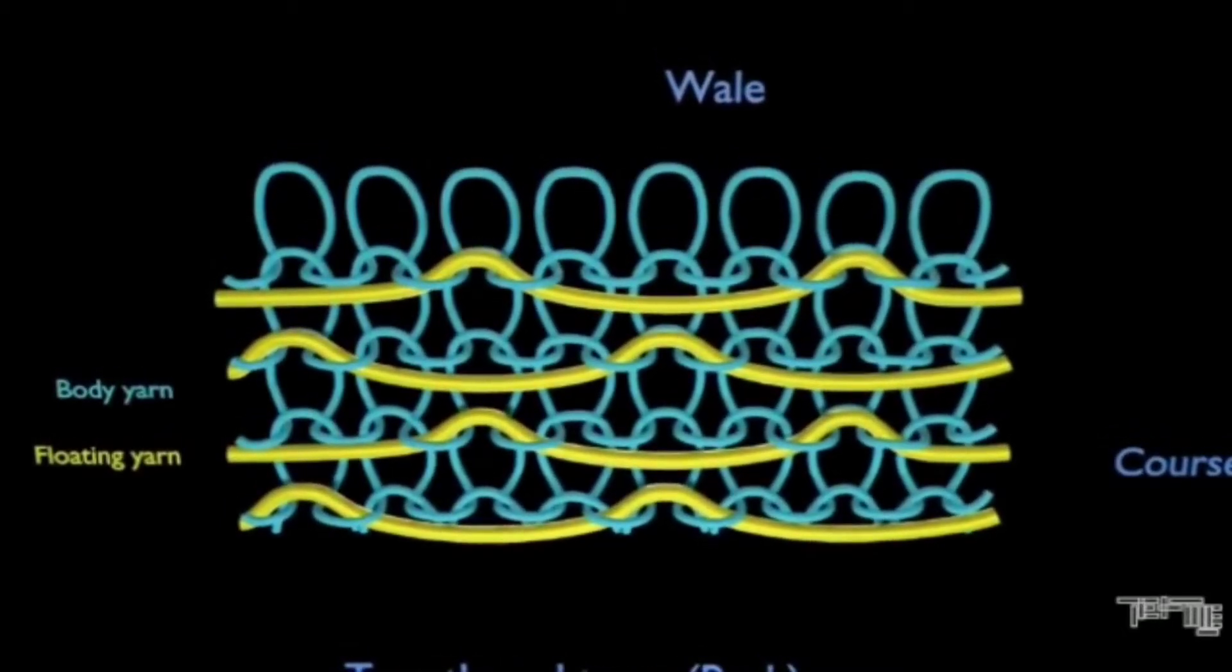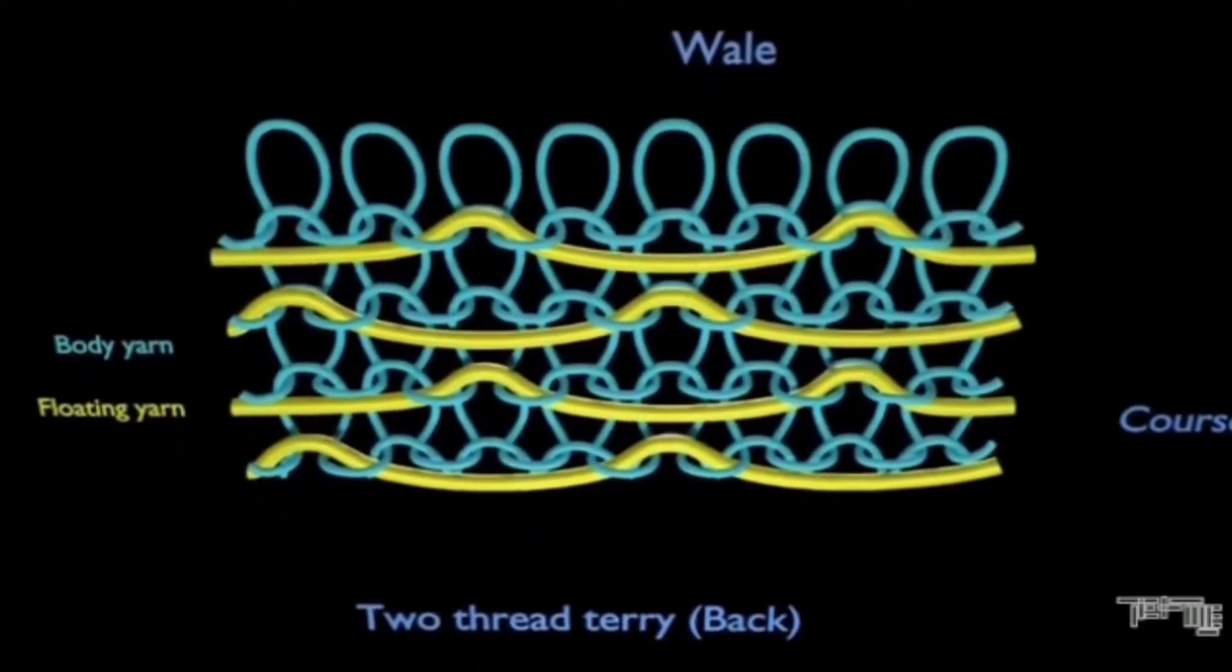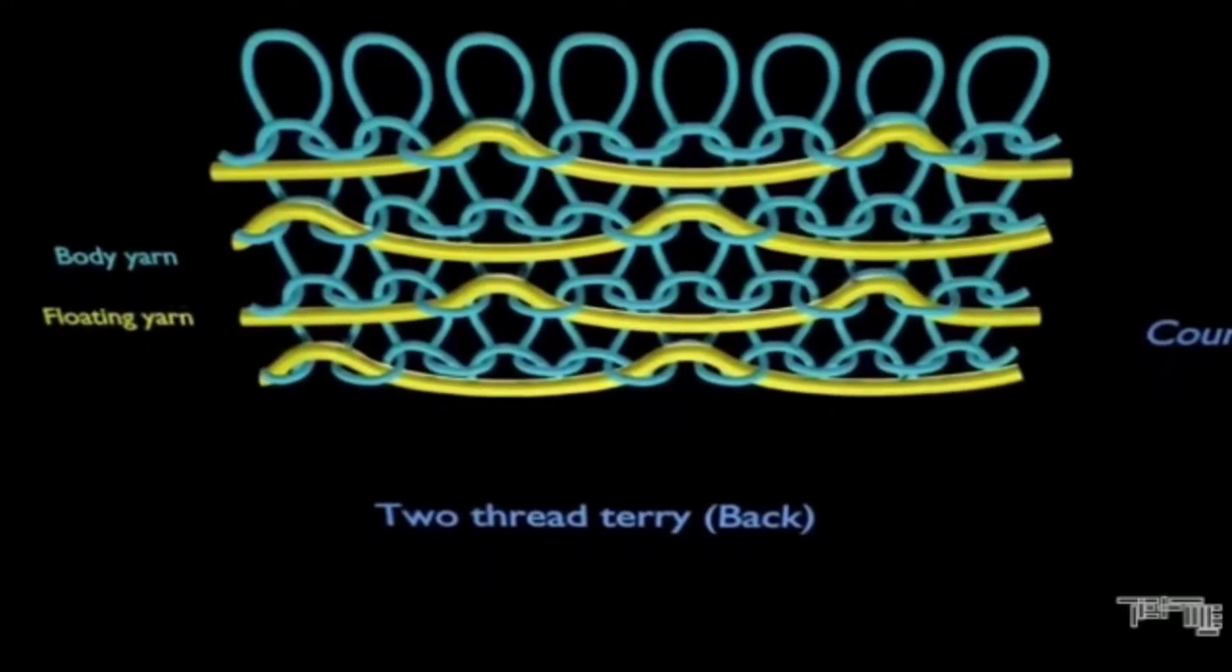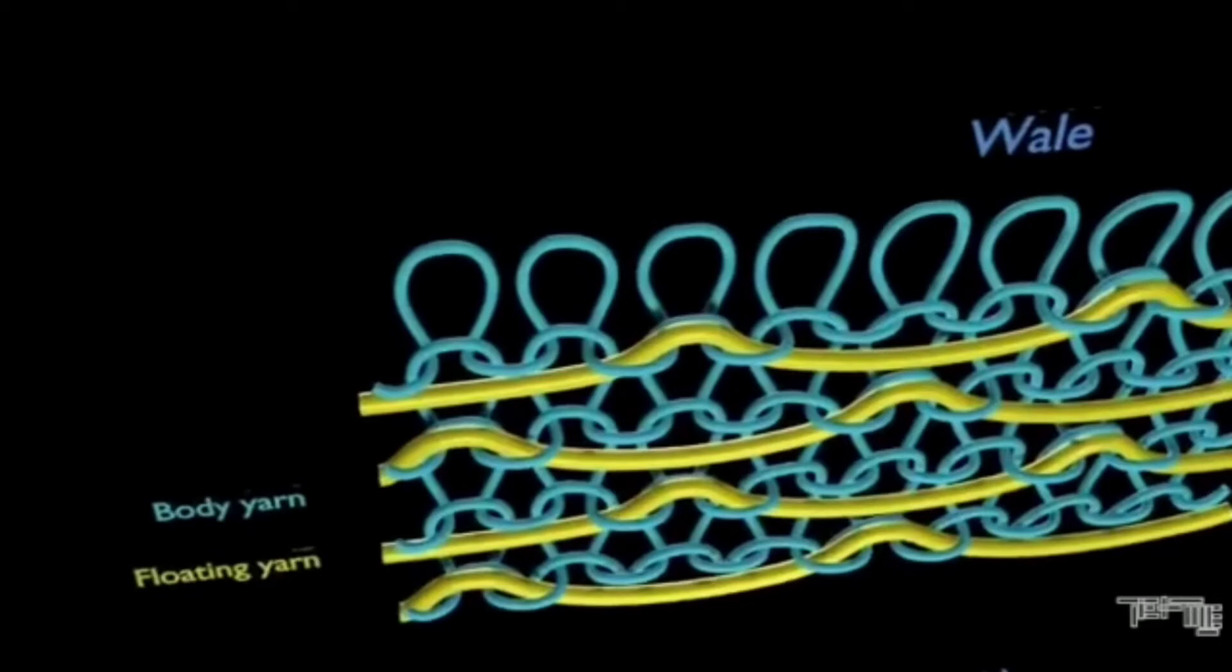In the two-thread terry fabric, there are two yarns. One yarn provides the ground or body. The second yarn, which may be coarser and heavier to accommodate subsequent napping, is the floating or inlay yarn that is tucked at predetermined intervals on selected needles.